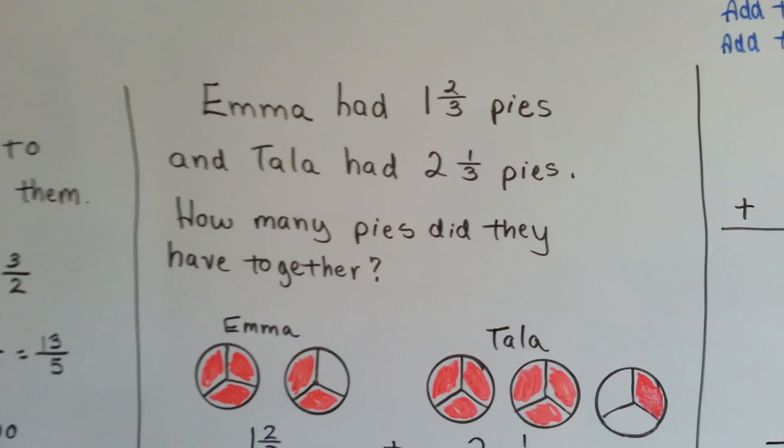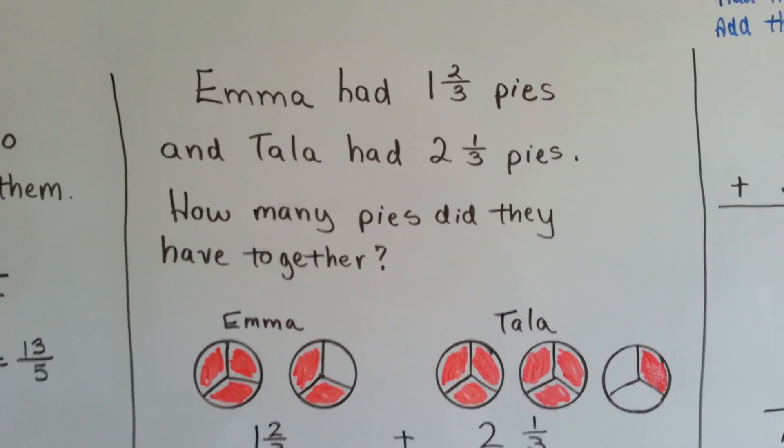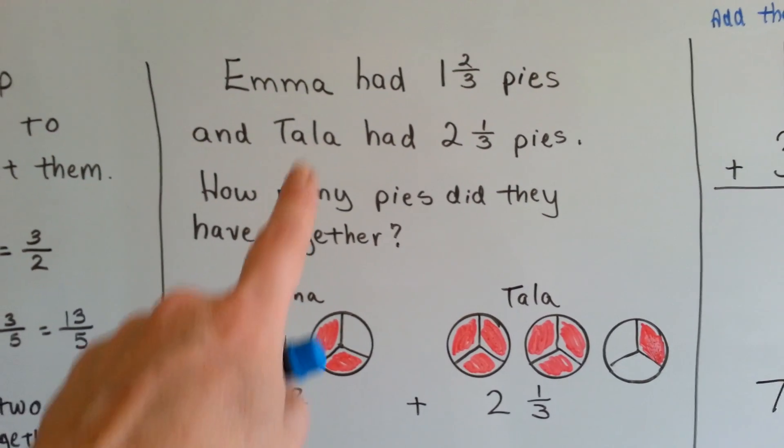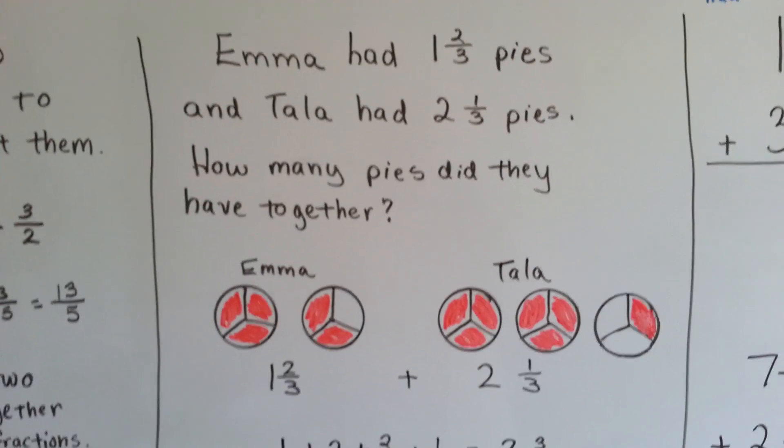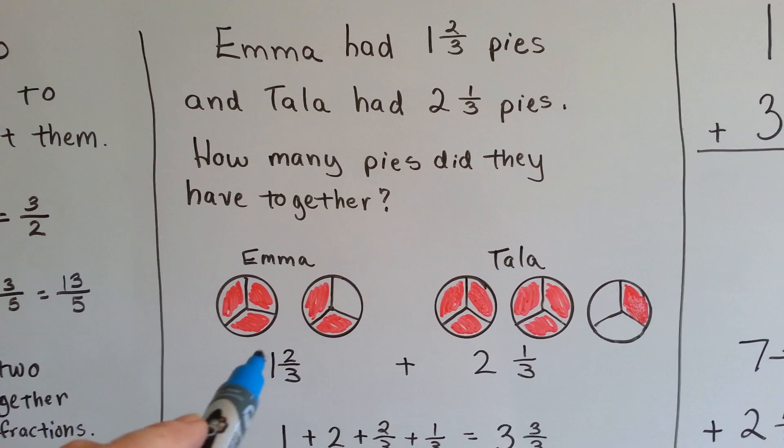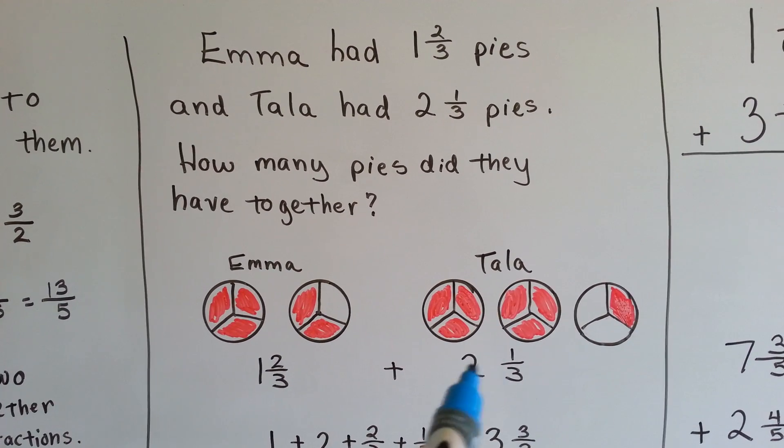Let's see what Emma and Tala are doing. Emma has 1 and 2/3 pies, right here. And Tala has 2 and 1/3 pies. How many pies do they have together? 1 plus 1 and 2/3 plus 2 and 1/3.